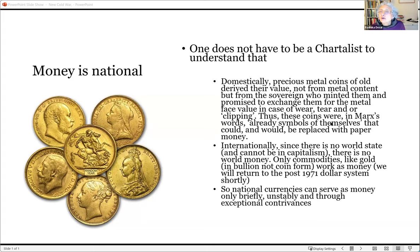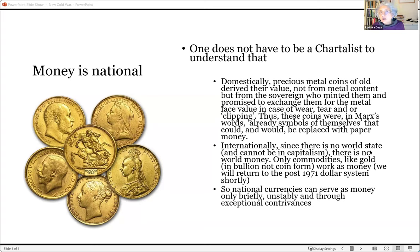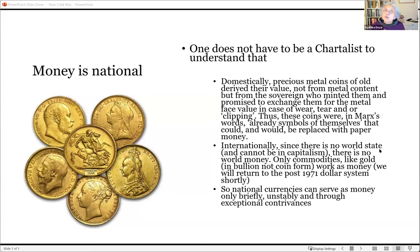Internationally, there is no world state. I would argue there cannot be a world state as long as we have a capitalist economy with substantial capitalist economies still in existence. So there is no world state and therefore there can be no world money. Historically, only commodities like gold — not in coin form but in bullion form — have served as world money. But bullion is not money; it's a commodity. So in fact, there is no world money. What you have internationally is not a money economy, but a barter economy. National currencies can serve as world money only briefly, unstably, and through exceptional contrivances.